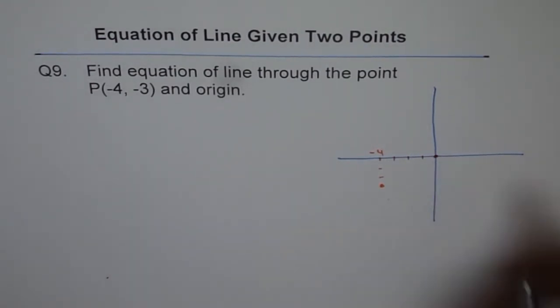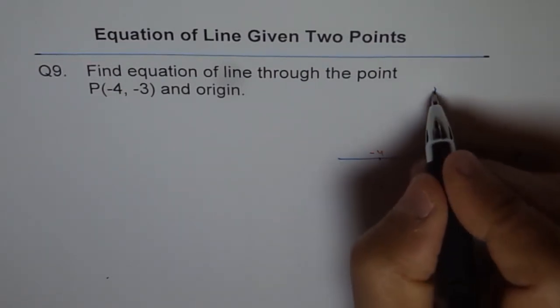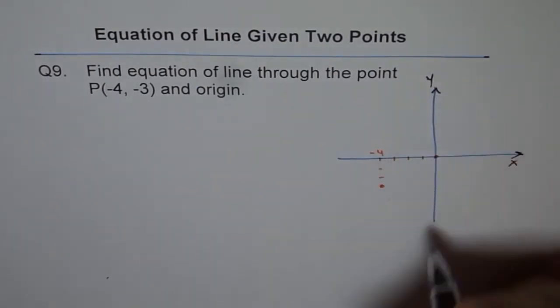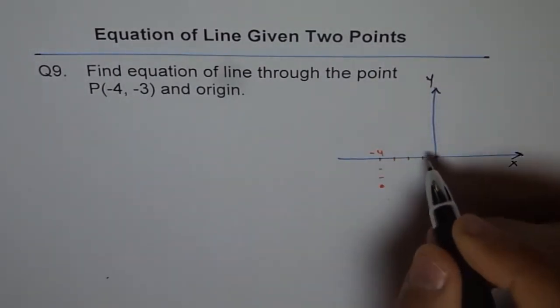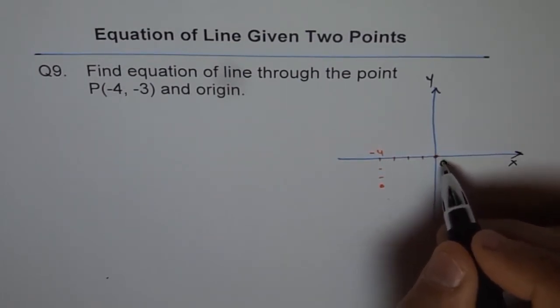Origin is always at the intersection of X and Y axis. So that is our X axis and this is Y axis. Right at the origin or intersection of X and Y axis, we have origin O. And the coordinates of origin are always (0, 0).